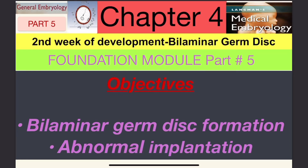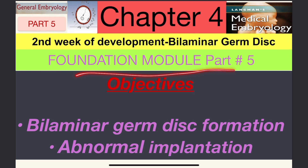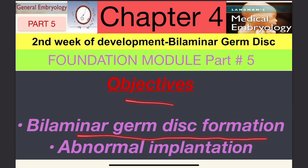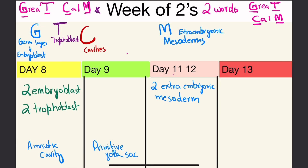We are continuing our general embryology session. This is part 5, chapter 4: second week of development — bilaminar germ disc. Foundation module part 5 objectives: we have bilaminar germ disc formation and abnormal implantation.